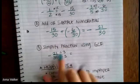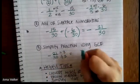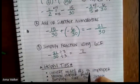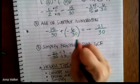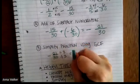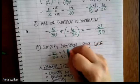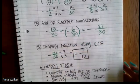So if we do this, 21 divided by three is seven, 30 divided by three is 10. And remember, this is still a negative answer. So our answer is going to be negative seven tenths after we simplify.